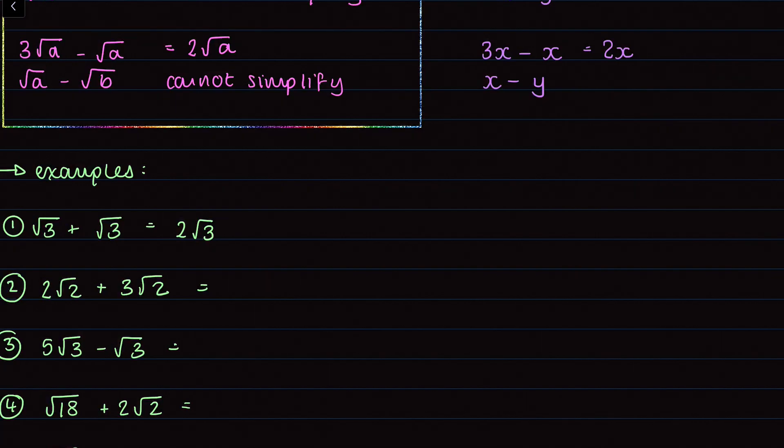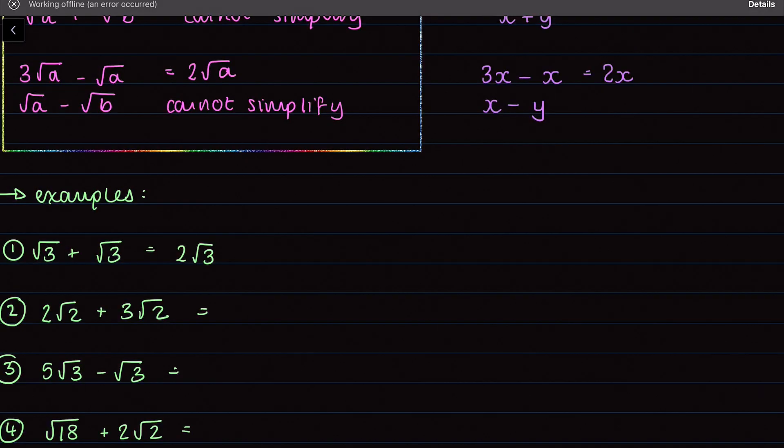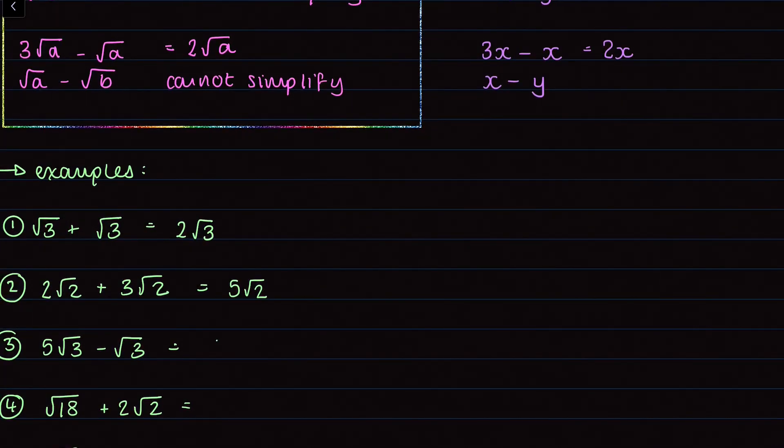Number 2, we have 2 root 2 plus 3 root 2. We can apply the same principle, so I know that I'm now going to have 5 lots of root 2. 5 root 3 minus root 3, so that's like having 5x minus x, so we know that's going to be 4 root 3.